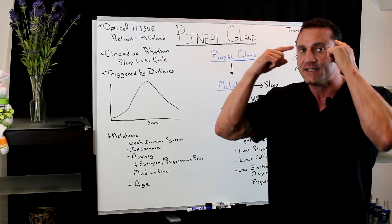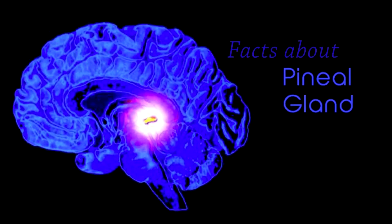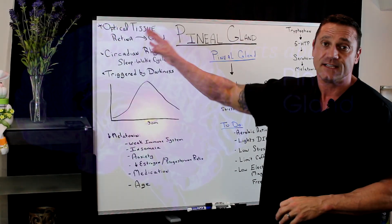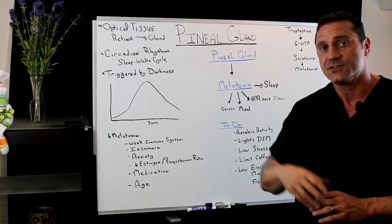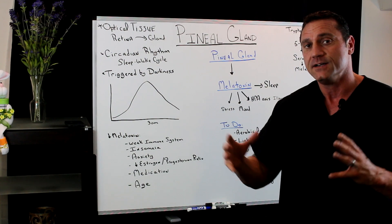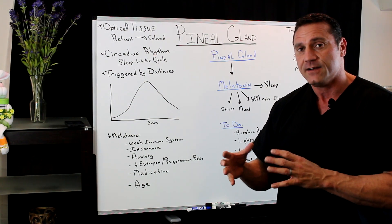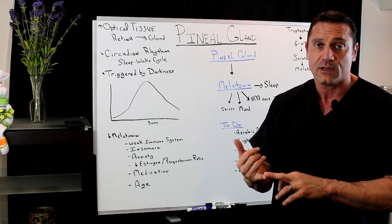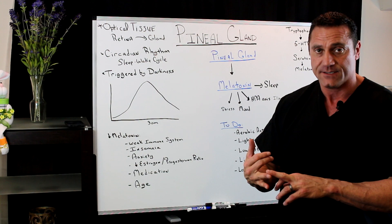The pineal gland is located basically in the center of the brain, otherwise known as the third eye. The pineal gland does contain some optical tissue which has a direct link to the retina, because it is triggered and activated by low light, like amber light, and darkness.